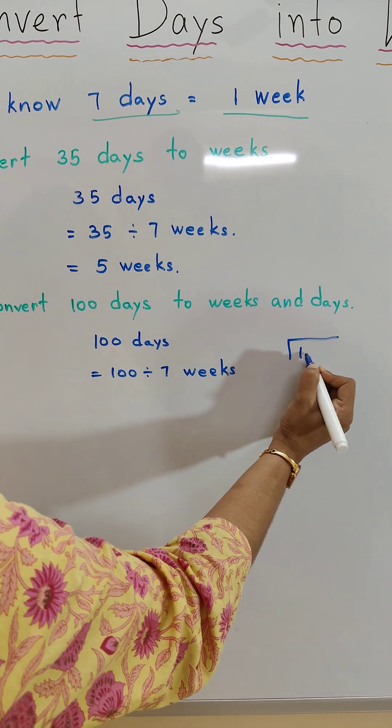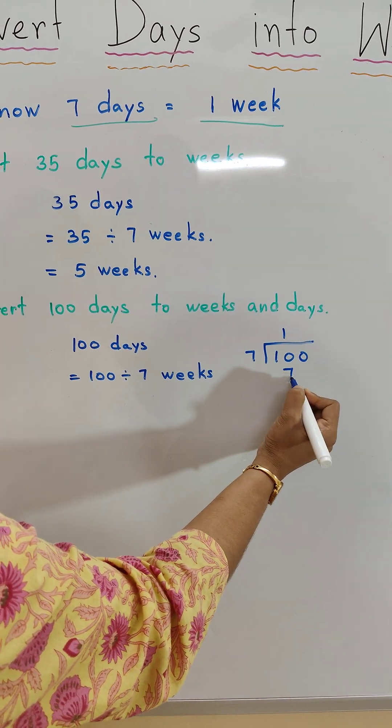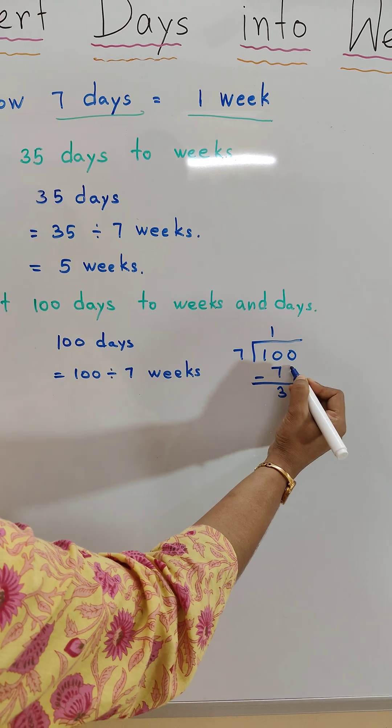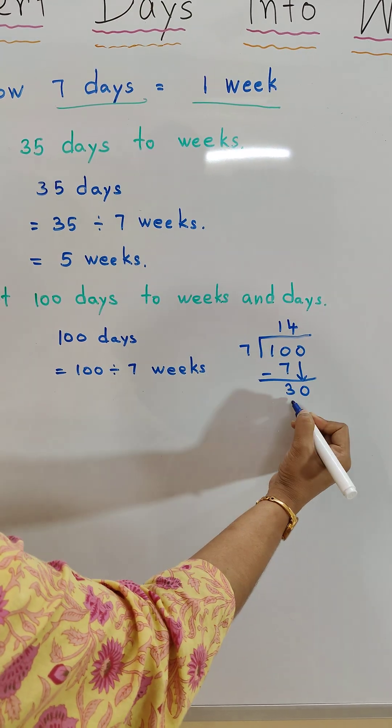Now we will do division. 100 divided by 7. 7 times 1 is 7. 10 minus 7 is equal to 3. 0 will come down. It becomes 30. 7 times 4 is 28.